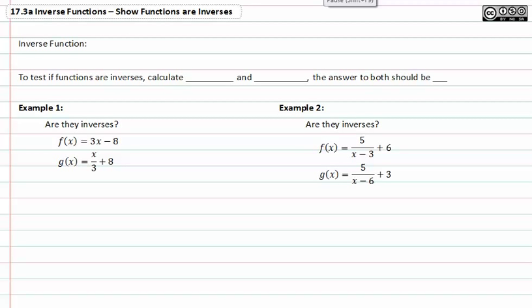An inverse function undoes another function. To test if functions are inverses, calculate f(g(x)) and g(f(x)). The answer to both should be x.